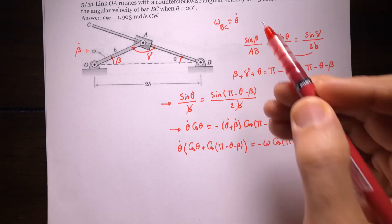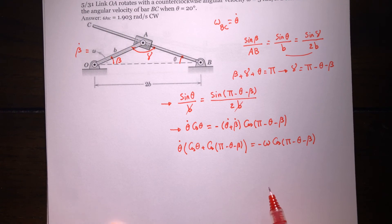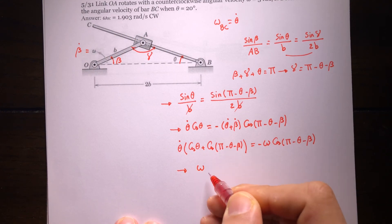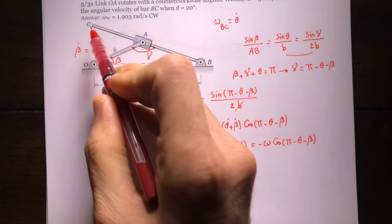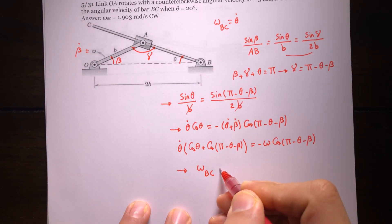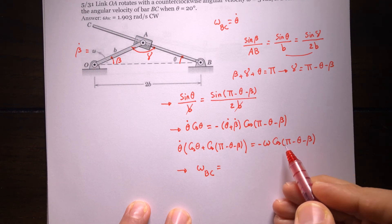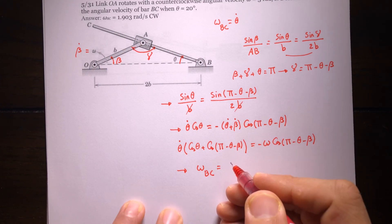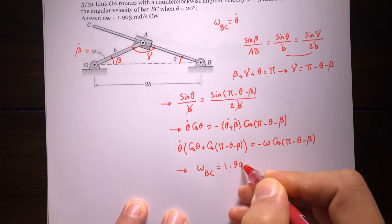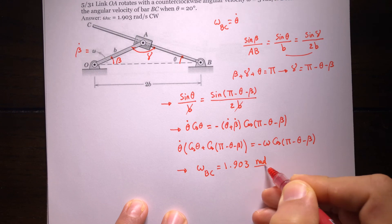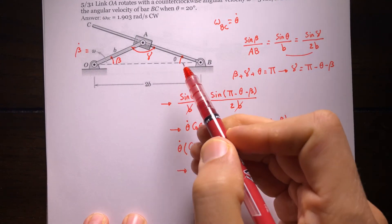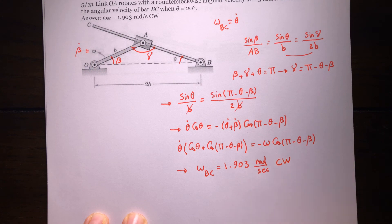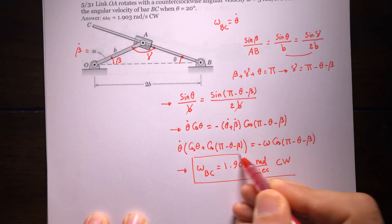Theta-dot is the angular velocity of BC, so omega-BC equals negative omega times cosine of (pi minus theta minus beta) divided by the bracket expression. The final answer is 1.903 radians per second. Since theta-dot is positive in the clockwise convention used here, the direction of this angular velocity is clockwise.